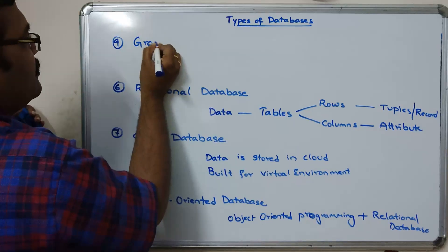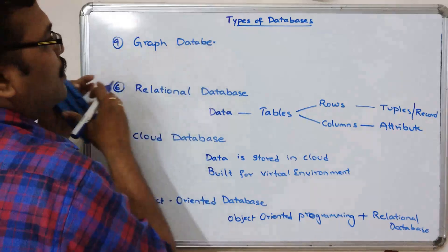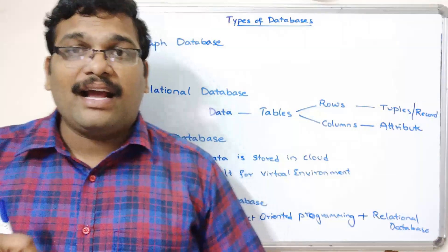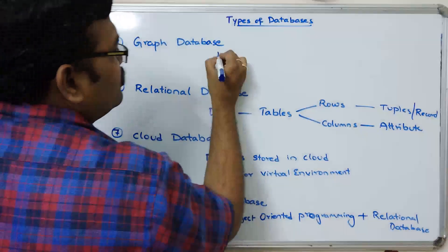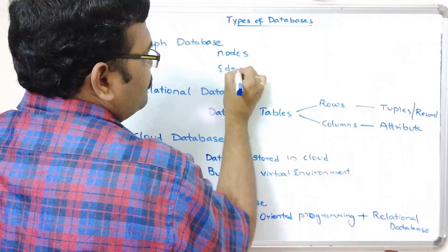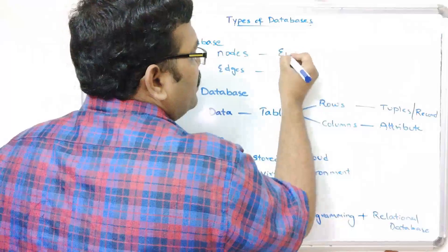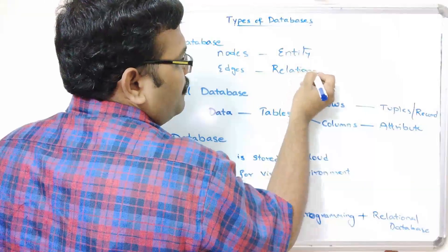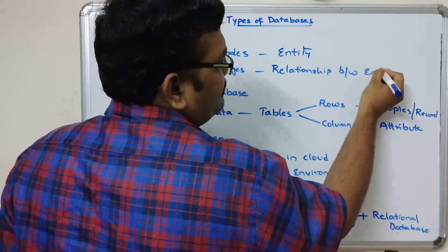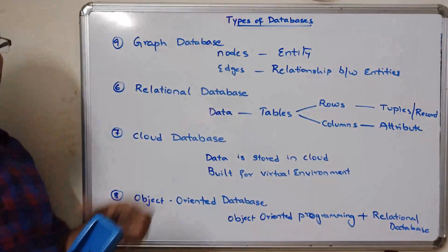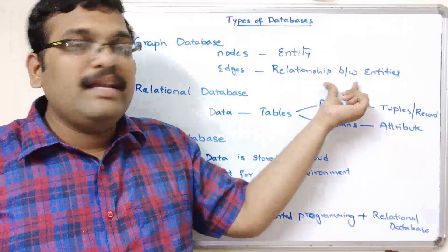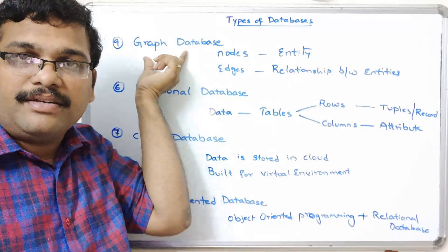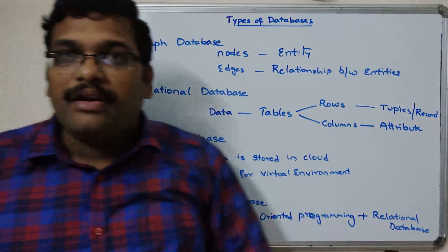The last type is the graph database. A graph is a collection of nodes and edges. In this database, a node represents an entity and an edge represents the relationship between entities. That is how the graph database is organized.